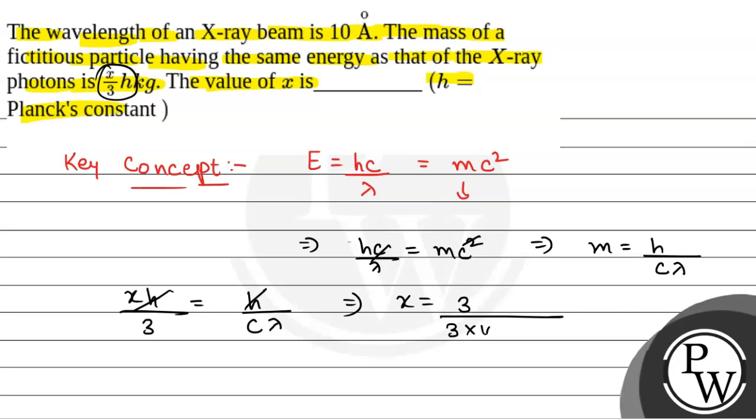c is 3 times 10 to the power 8 meter per second and lambda is 10 angstrom, that is 10 times 10 to the power minus 10. So from here, we will have x equals 10. The value of x is 10.